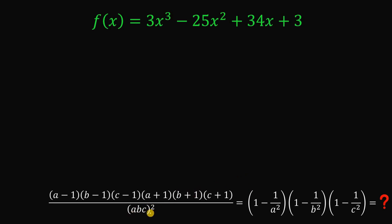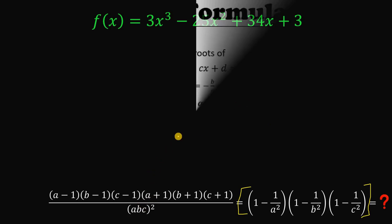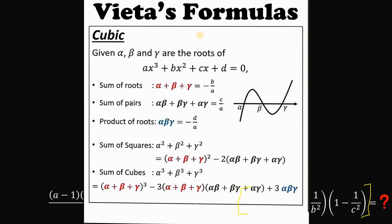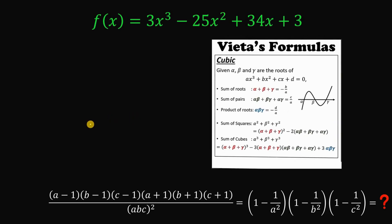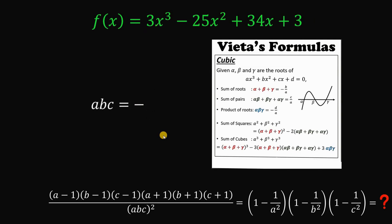To find abc, we use Vieta's relations. For a cubic equation, the product of roots equals -d/a. Given our cubic function, the product abc = -3/3 = -1. So (abc)² = (-1)² = 1.